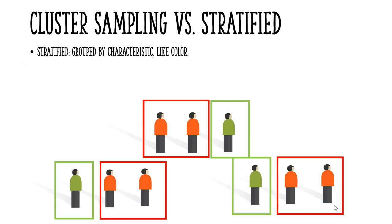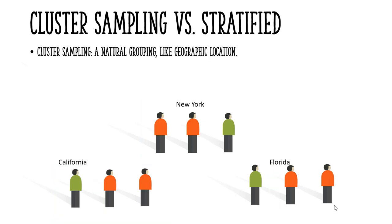Cluster sampling and stratified sampling are very similar — in fact, they're so similar they're often confused. But with stratified sampling, you're going to group by characteristic. For example, you might subdivide a population by colour. With cluster sampling, you're looking for a natural grouping, like geographic location.